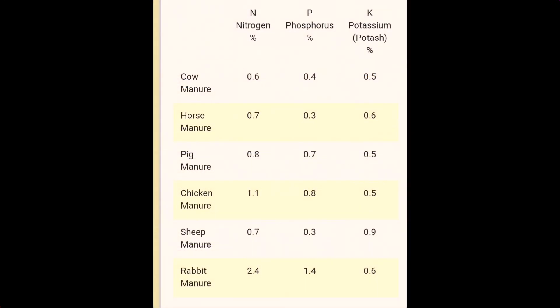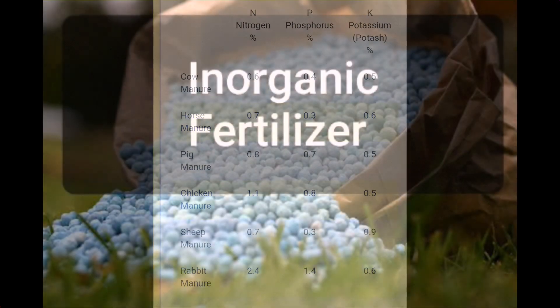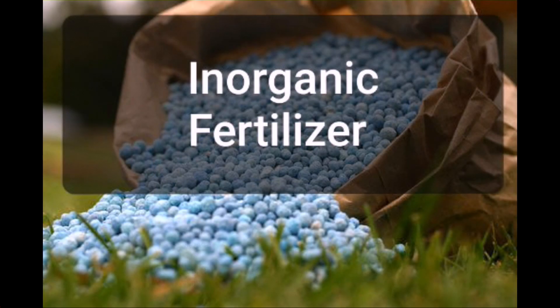These are the animal-derived manures: cow manure, horse manure, swine manure, chicken manure, and sheep manure. Amongst all, sheep manure contains 0.9% potassium. It is a very useful manure which can be applied directly from the animal to the plant — it doesn't burn the plants and is very good for organic farming.